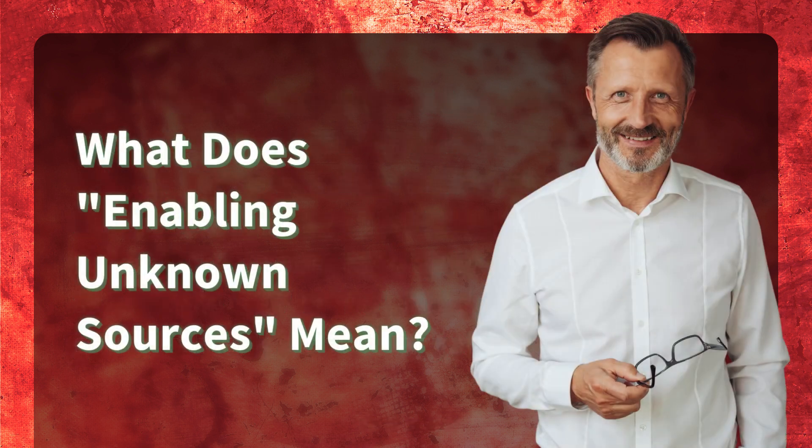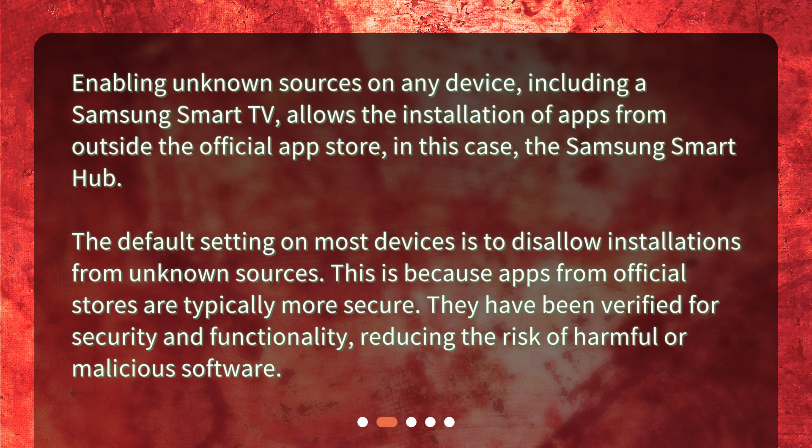What does enabling unknown sources mean? Enabling unknown sources on any device, including a Samsung Smart TV, allows the installation of apps from outside the official app store — in this case, the Samsung Smart Hub. The default setting on most devices is to disallow installations from unknown sources, because apps from official stores are typically more secure. They have been verified for security and functionality, reducing the risk of harmful or malicious software.